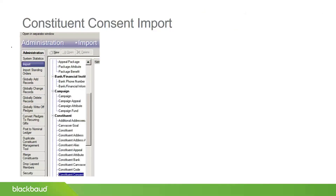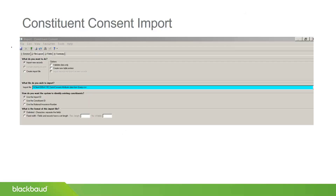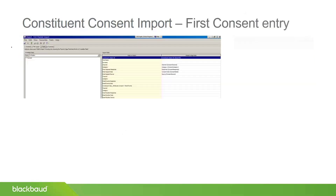In the import module, there is now a new import type called 'constituent consent.' I select that, then locate my file. I'm doing an import of new records — I could do validation first. I'm selecting to use the import ID and leaving it on the default of delimited. For mapping, I'm mapping to the import ID and mapping against the first attribute only, since you can only bring in one channel and category at a time. I'm ignoring the second and third attributes for now.